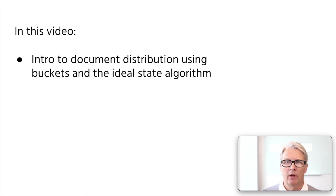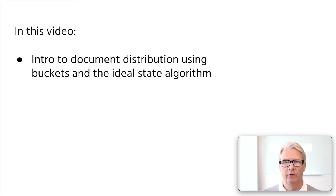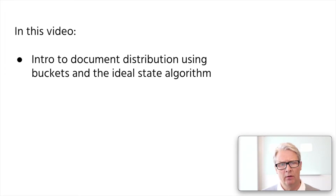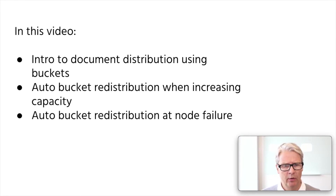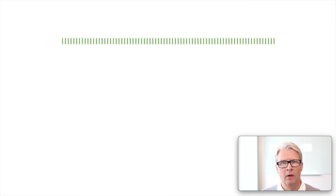In this video, we'll look at how Vespa redistributes documents in a dynamic system when the node count changes. We'll look at document distribution using the ideal state algorithm. We'll look at what happens when you add capacity to a system, and what happens when a node fails. But first, a quick note on documents and buckets.